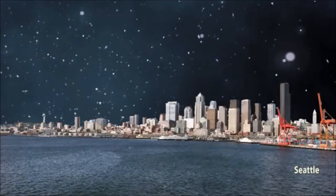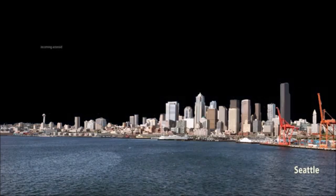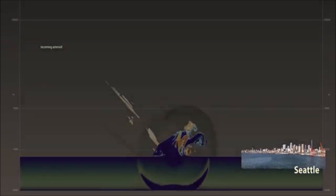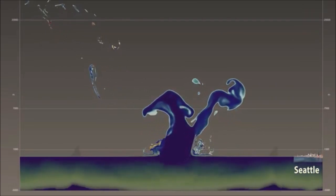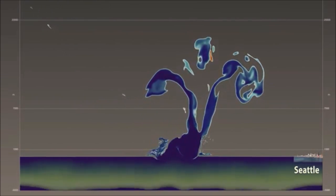An ocean impact within 10 to 20 kilometers of a populated coastline would be devastating, causing severe flooding, destructive shock waves in the air, high temperatures, and hurricane-force winds.